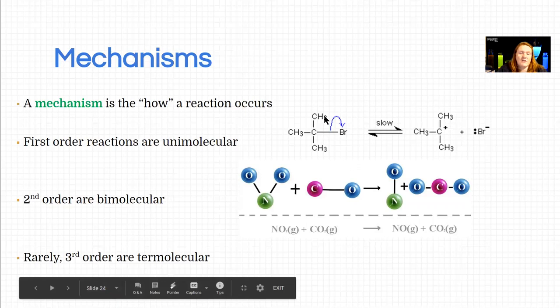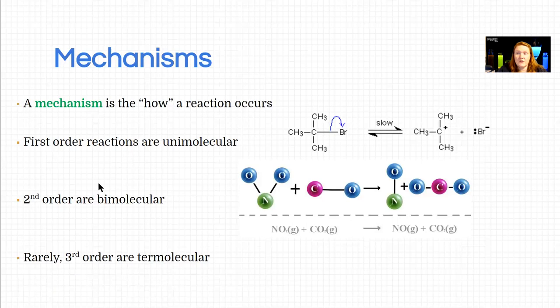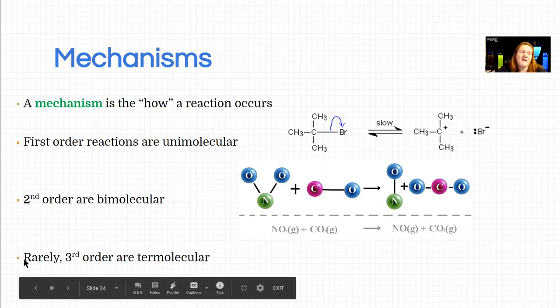We call that unimolecular if there's just one molecule. So that's first order. If your total of the exponents is two, we call that bimolecular mechanism. Two molecules have to be oriented correctly. If you add it up and they're third order, we call that termolecular. Term means three.